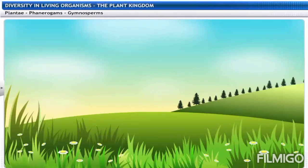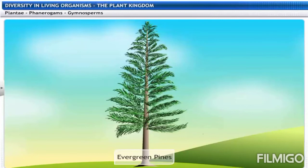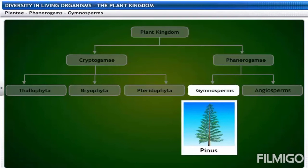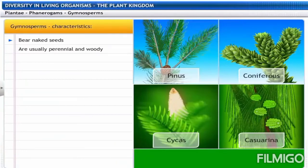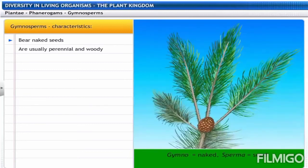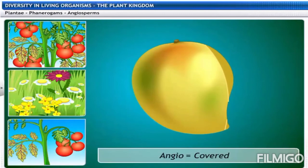Gymnosperms include coniferous trees such as pinus, cycas and other conifers. They are evergreen because they don't shed all their leaves at once, remaining green throughout the year. Gymnosperms get their name from two Greek words: gymna meaning naked, and sperma meaning seeds. They are perennial, woody, and produce hard woody cone-like structures. Male cones produce pollen grains and female cones produce seeds.